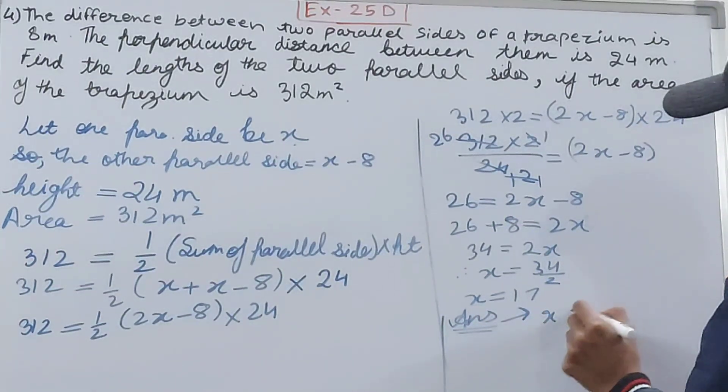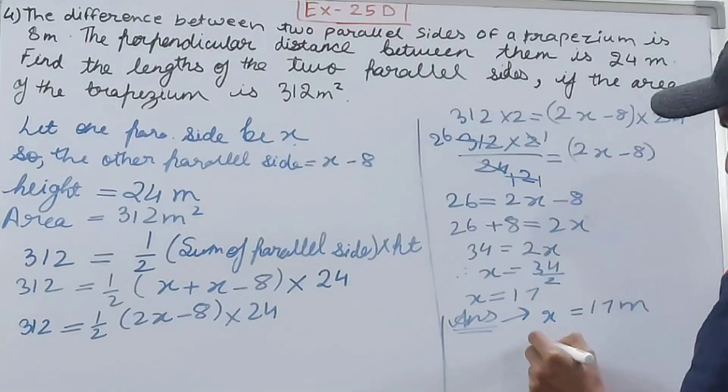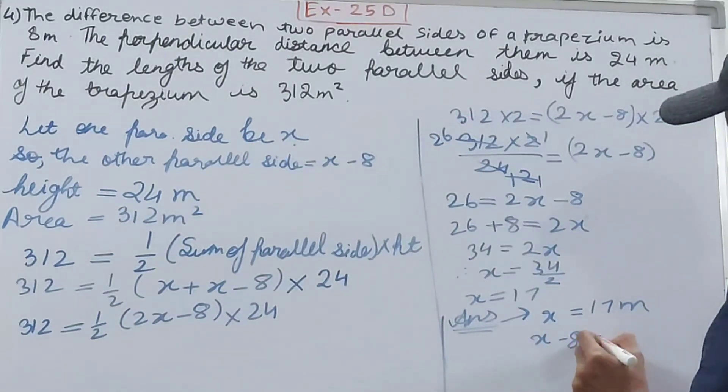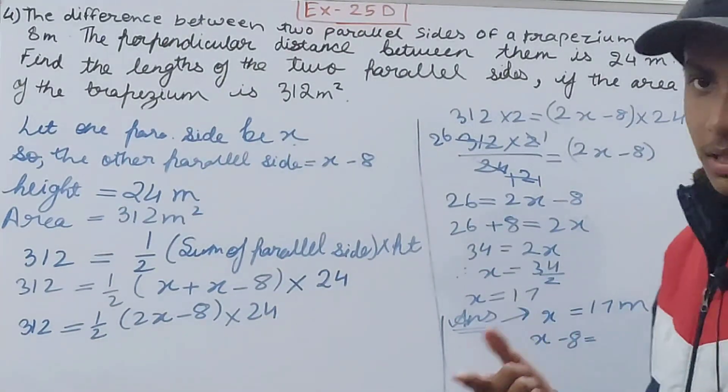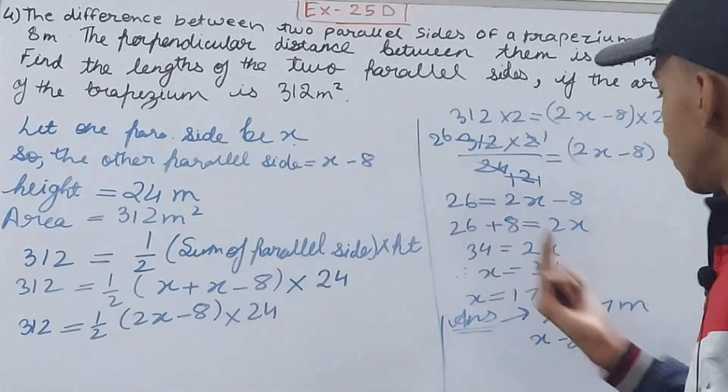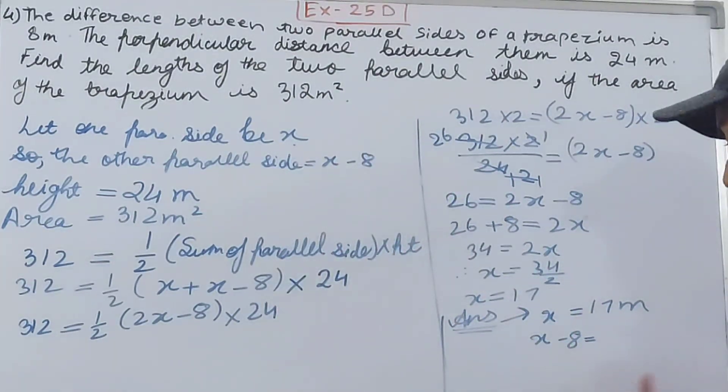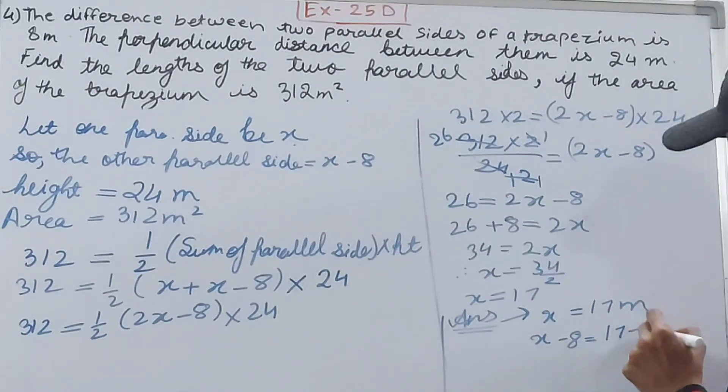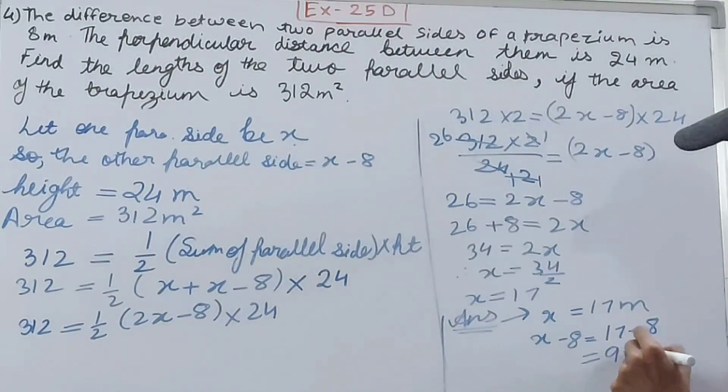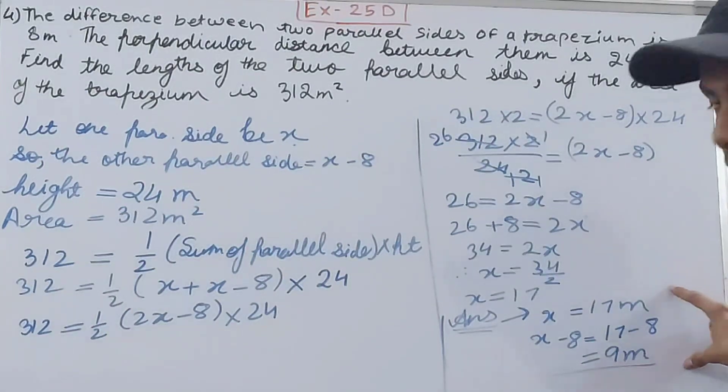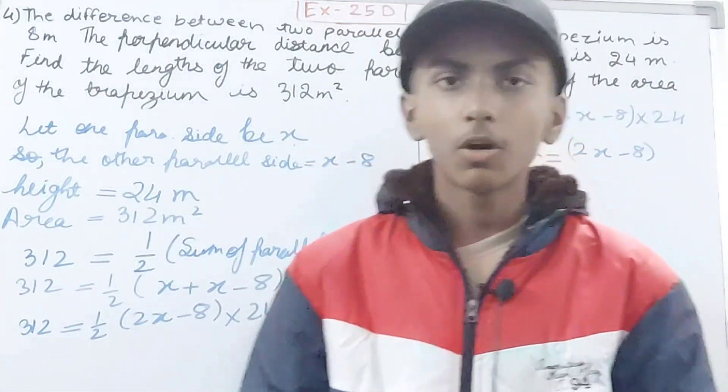Now let's put the answers. We've calculated the value of X. First side was X, this is 17 meters. Another side was X minus 8, that is 17 minus 8, which is 9 meters.